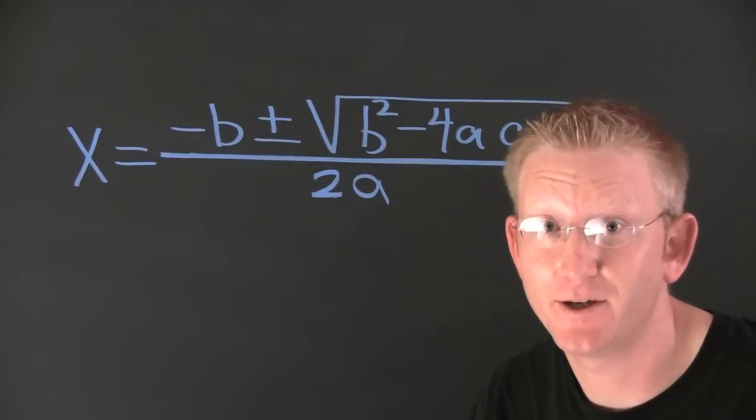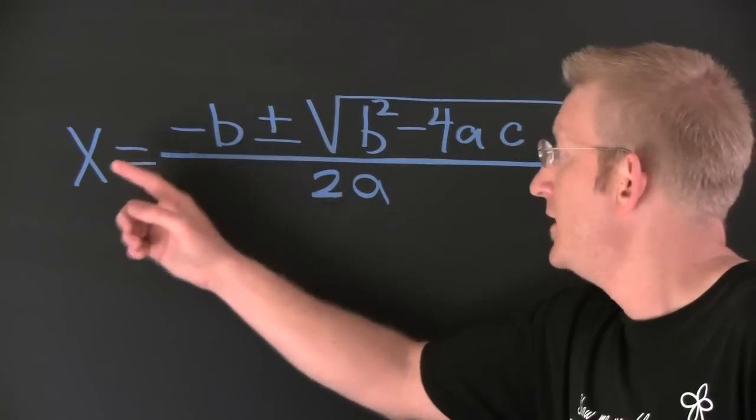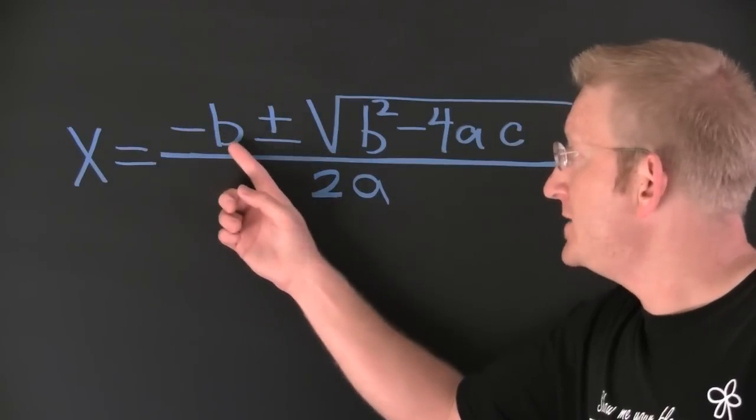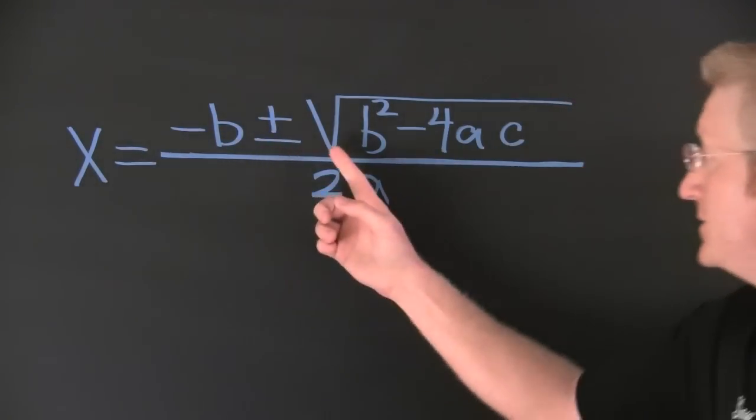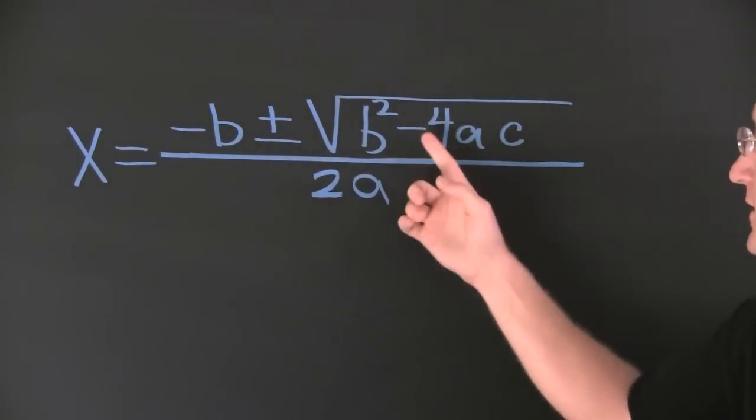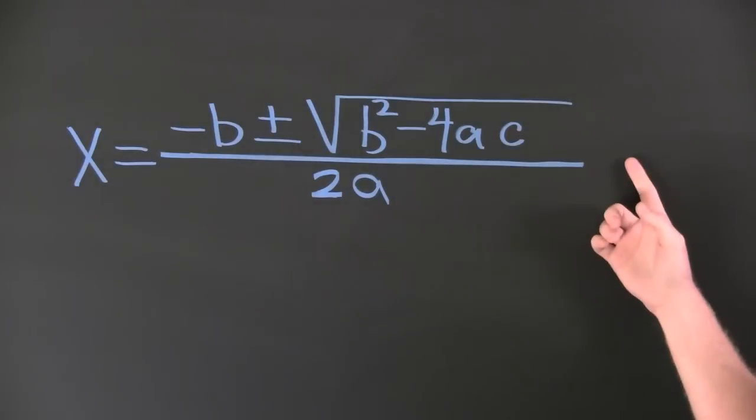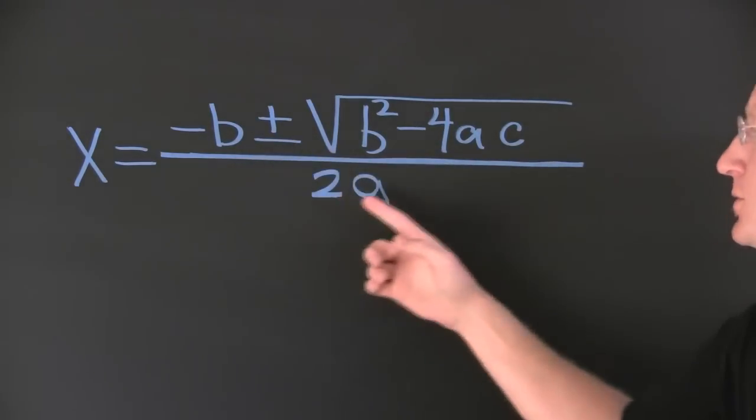Here it goes, here it goes, here it goes. X is equal to minus b plus and minus square root b squared minus 4ac all over 2a.